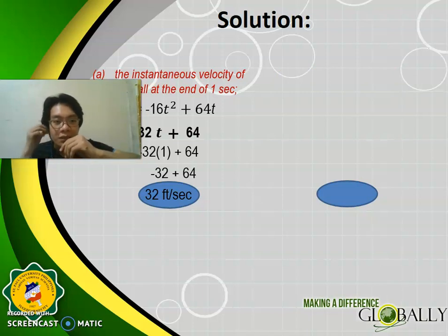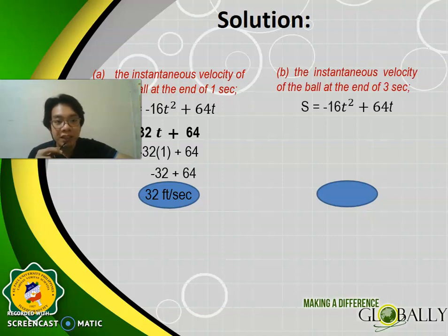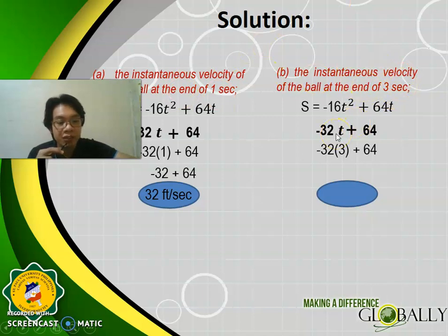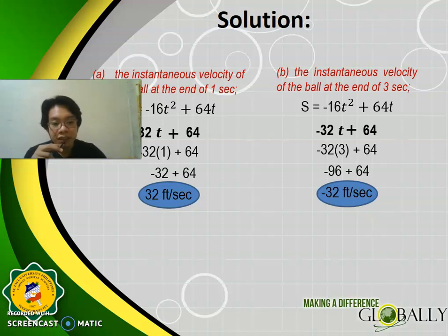For part B — the instantaneous velocity at the end of 3 seconds. Same process: get the derivative of the equation of motion and substitute T = 3. So: −32(3) + 64 = −96 + 64 = −32 feet per second. At the end of 3 seconds, the ball is falling with an instantaneous velocity of −32 feet per second.